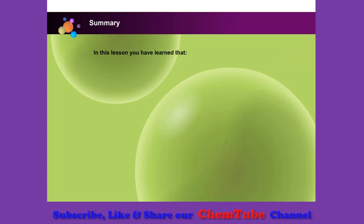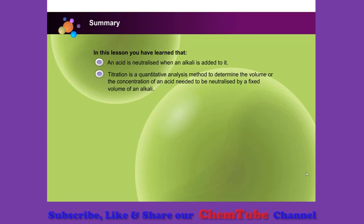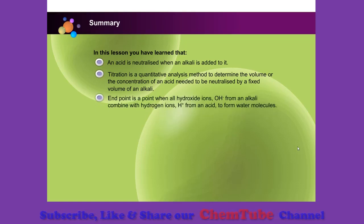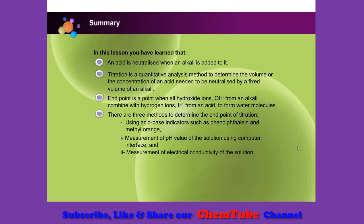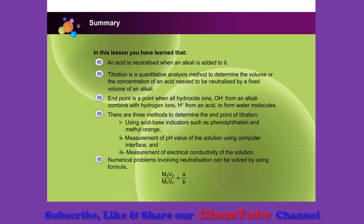In this lesson, you have learned that an acid is neutralized when an alkali is added to it. Titration is a quantitative analysis method to determine the volume or the concentration of an acid needed to be neutralized by a fixed volume of an alkali. Endpoint is a point when all hydroxide ions from an alkali combine with hydrogen ions from an acid to form water molecules. There are three methods to determine the end point of titration: using acid-base indicators such as phenolphthalein and methyl orange, measurement of pH value of the solution using computer interface, and measurement of electrical conductivity of the solution. Numerical problems involving neutralization can be solved by using formula MAVA over MBVB equals to A over B, where A stands for acid and B stands for base.